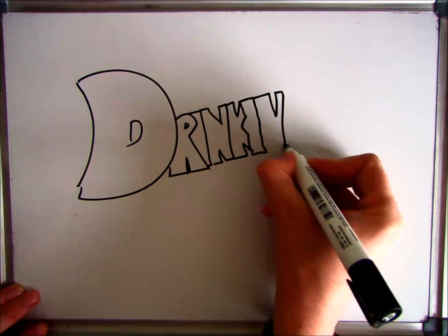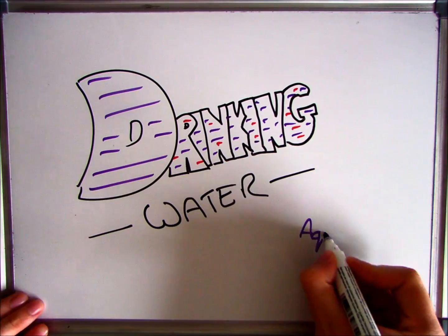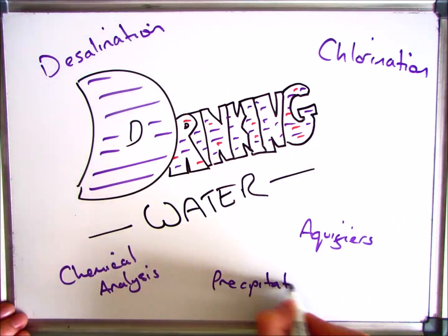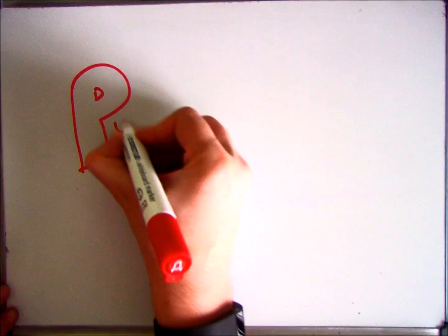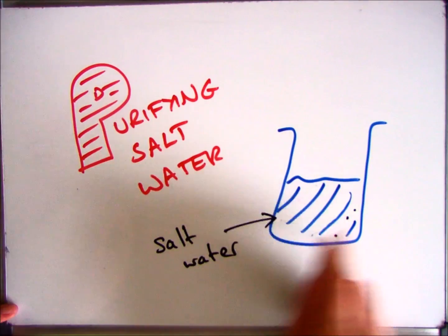This video is going to focus on the different ways that we can take water and turn it into drinking water and the importance of having pure water when doing chemical analysis. The first section that we're going to focus on is how we can take salt water from the sea and purify it.